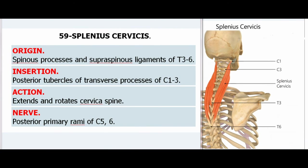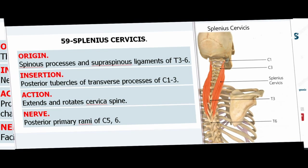59. Splenius Cervicis. Origin: Spinous processes and supraspinous ligaments of T3–6. Insertion: Posterior tubercles of transverse processes of C1–3. Action: Extends and rotates cervical spine. Nerve: Posterior primary rami of C5–6.